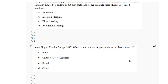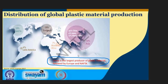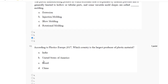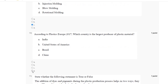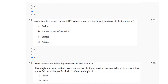Question number ten: which country is the largest producer of plastic material? China is the largest producer of plastic material, followed by others. The correct answer for question number ten is D, China.